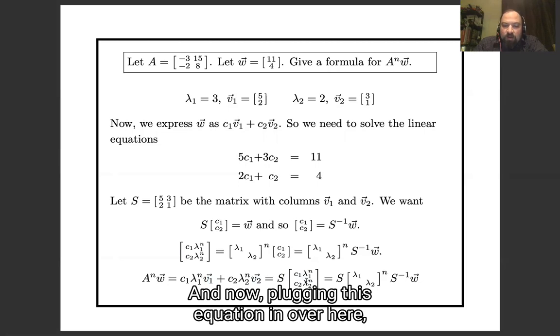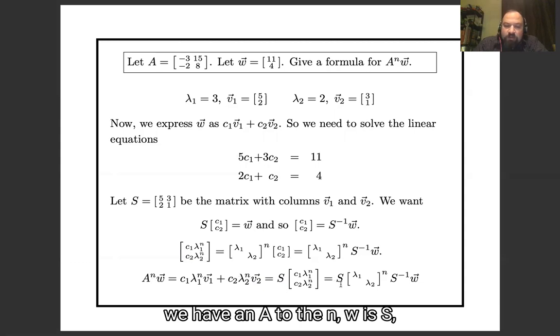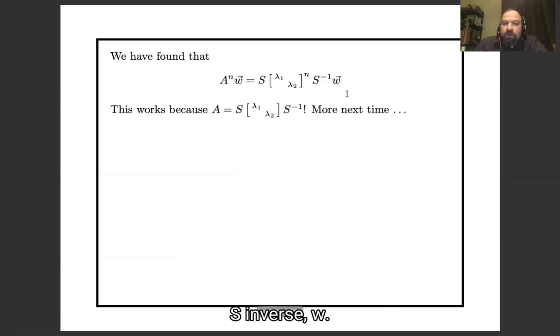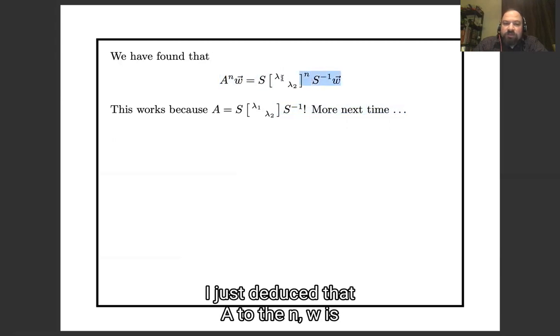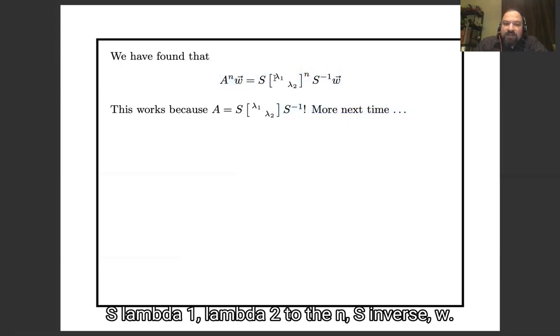And now plugging this equation in over here, we have Aⁿw is S times the diagonal matrix to the n times S⁻¹w. So I've copied over to the next slide the formula I just deduced, that Aⁿw is S[λ₁, λ₂]ⁿS⁻¹.